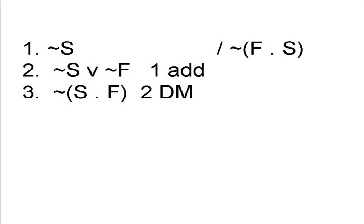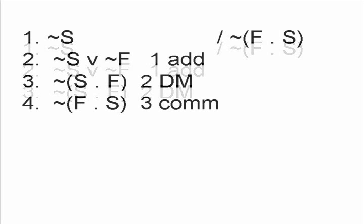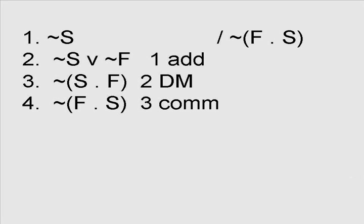Now we've performed DeMorgan's Rule, and notice when we do this, we have to change the sign from a disjunction to a conjunction. But this proof is not finished, because in order to finish any proof, you have to derive the conclusion as it appears exactly. Since line 3 is not exactly the conclusion, we'll have to use the rule of commutativity, thus proving the argument valid.